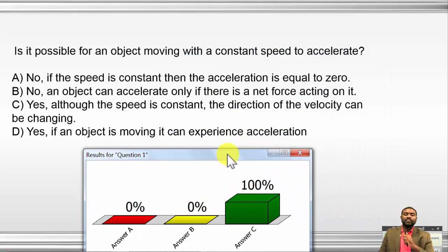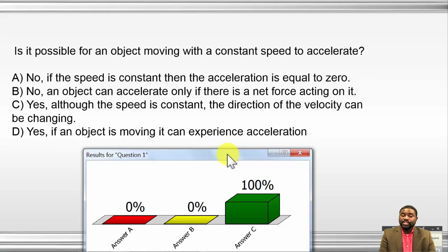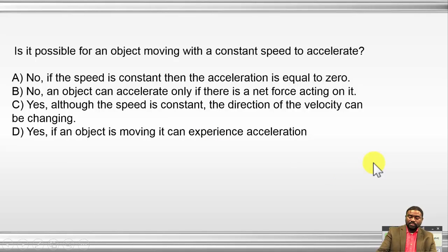The question says: is it possible for an object moving with a constant speed to accelerate? A: No, if the speed is constant then the acceleration is zero. B: No, an object can accelerate only if there is a net force acting on it. C: Yes, although the speed is constant, the direction of the velocity can be changing. D: Yes, if an object is moving it can experience an acceleration. The entire class chooses C, and the answer is C.